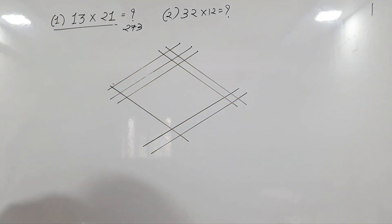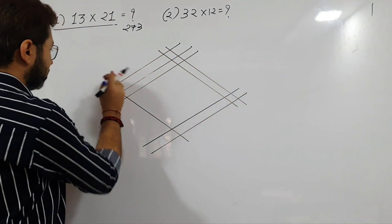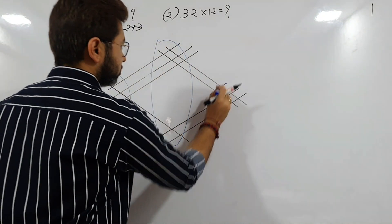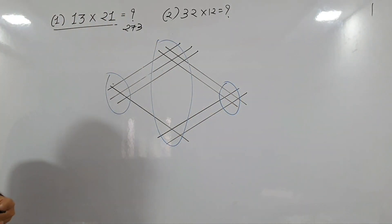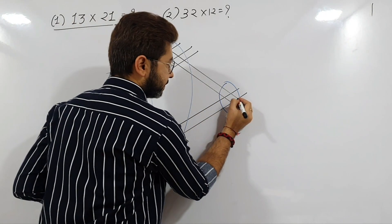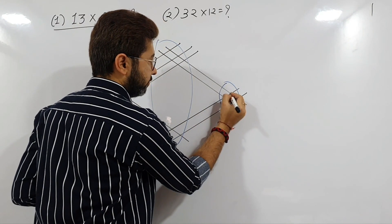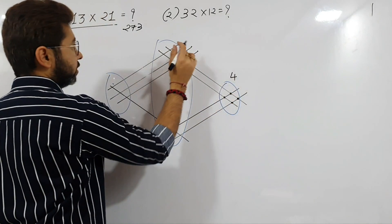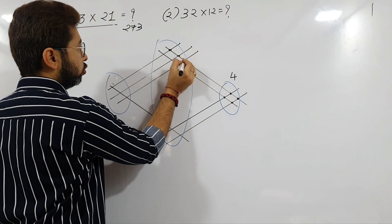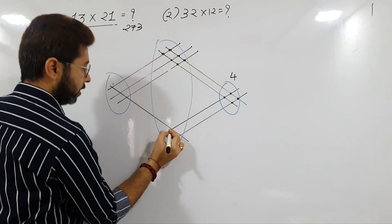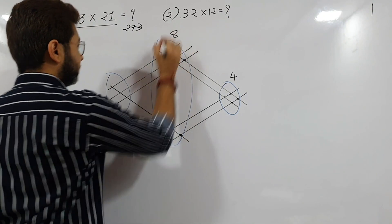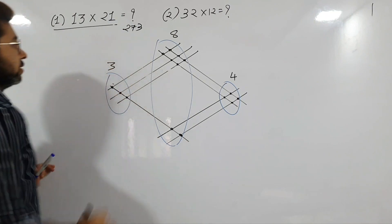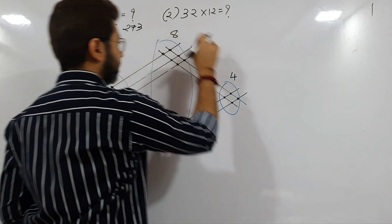Dividing into three equal zones: zone number one, zone number two, and zone number three. Starting: one, two, three, four — crossings are 4, so the last digit is 4. Next zone: one through eight — that's 8. And here: one, two, three. The answer is 3, 8, 4.